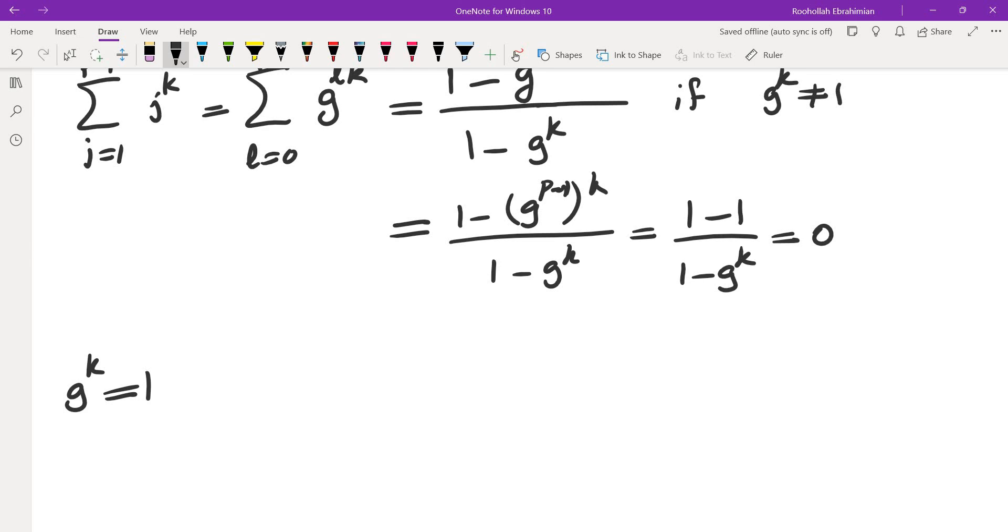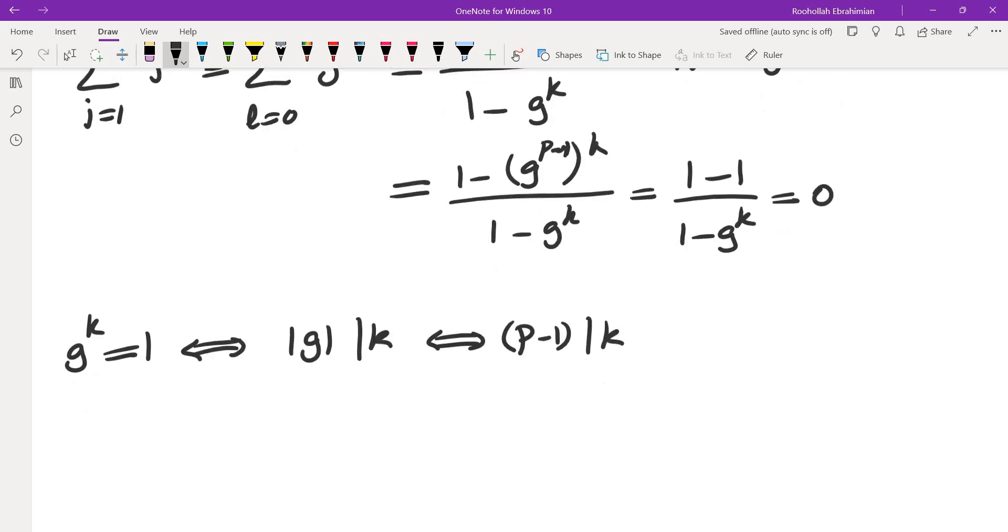Now when does g^k become 1? g^k is 1 by properties of order whenever the order of g divides k. This is explained in the video I put in the description. This is the same as (p-1) dividing k. So if (p-1) does not divide k, then the sum is 0.